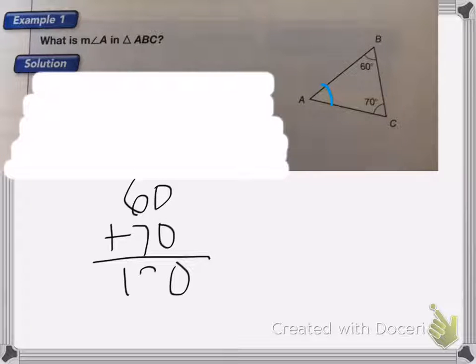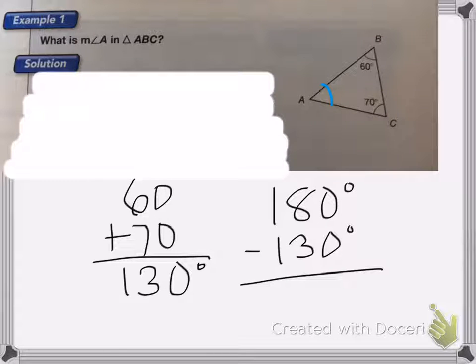Okay, 6 plus 7 is 13. So I know that those two angles added together equals 130. So I'm going to subtract that from 180 degrees. Okay, 8 minus 3 is 5. So that means angle A has to equal 50 degrees.